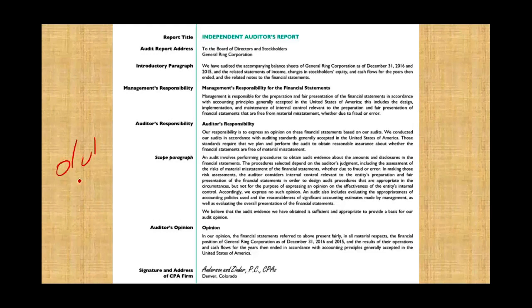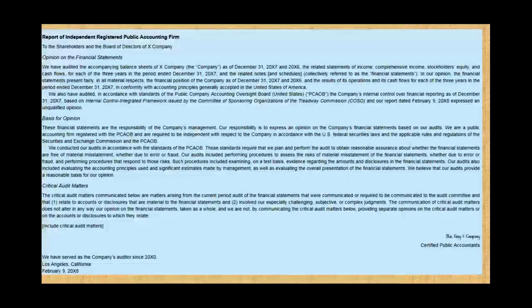After the Critical Audit Matters section, we'll have the signature, then the auditor's tenure — which is also new, highlighted in red — and then the date of the report. The new report looks a little bit different, but the critical audit matter section represents a major change since it is now included. This is the old report for comparison: introductory paragraph, management responsibility, auditor's responsibility, the scope paragraph, the opinion, and then the signature of the CPA firm.